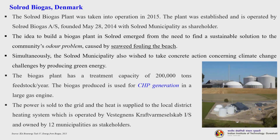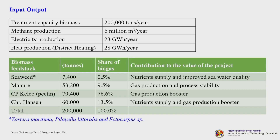Simultaneously, the Solrød municipality wished to take concrete action concerning climate change challenges by producing green energy. The biogas plant has a treatment capacity of 200,000 tons of feedstock per year. The biogas produced is used directly for CHP generation in a large gas engine combined heat and power system. The power is sold to the grid and the heat is supplied to the local district heating system operated by a company owned by 12 municipalities as stakeholders. The treatment capacity is 200,000 tons per year and methane produced is 6 million cubic metres per year.